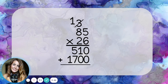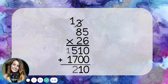Finally, I just add the two numbers together. Zero plus zero is zero, one plus zero is one, five plus seven is twelve, and one plus one is two. So eighty-five times twenty-six is two thousand two hundred ten.